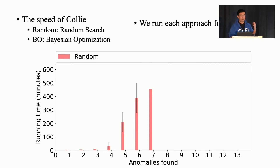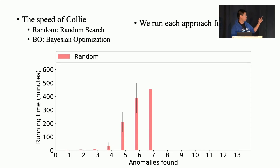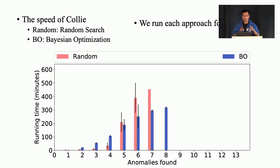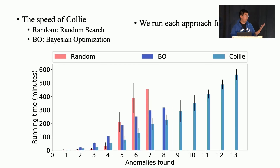For the efficiency of Collie, we compare it with two baselines. One is random search, which randomly generates a point in our search space to test. We run each approach for 10 hours, 600 minutes, and measure the time to uncover anomalies. The x-axis shows the number of uncovered anomalies and the y-axis shows time consumed. Random search already uncovers several anomalies because we designed a more comprehensive search space. With hardware counters as the search signal and algorithms like Bayesian optimization or simulated annealing, Collie's search speed is further accelerated — it finds more anomalies in less time. This demonstrates that hardware counters are very informative as search signals, and applying simple optimization algorithms can leverage these counters to accelerate the search process.